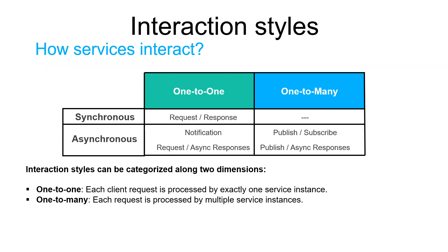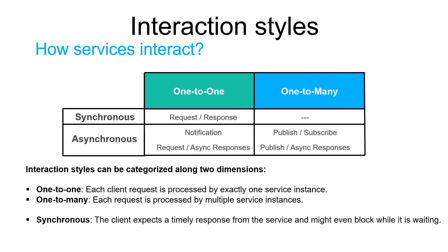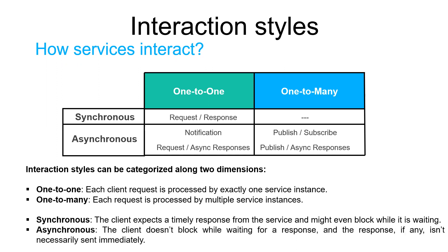The one-to-many type of interaction occurs when a request is processed by multiple service instances. Concerning the second dimension, synchronous communication is when the client expects a timely response from the service and might even block while waiting. In contrast, asynchronous communication is when the client doesn't block while waiting for a response, and the response, if any, isn't necessarily sent immediately.